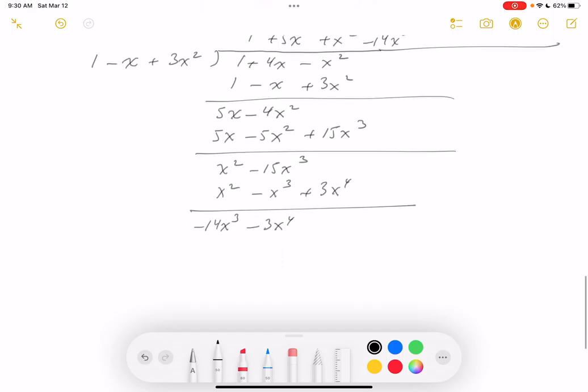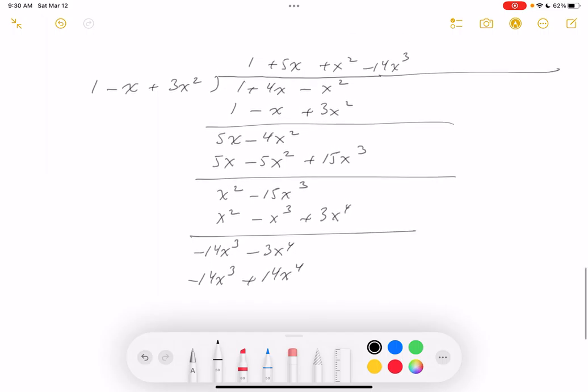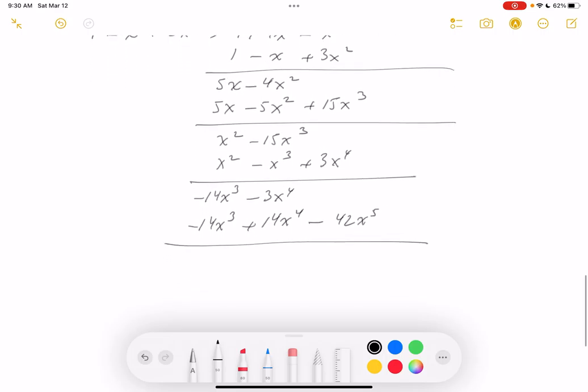Let's write this down. Minus 14x cubed plus 14x4. Minus, a little more difficult, 30 and 12, 42x5. Subtract. What do you get there? Minus 17x4 plus 42x5.